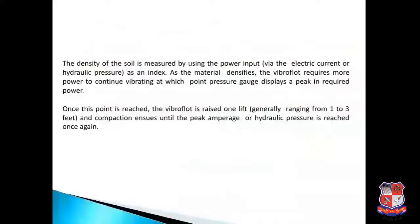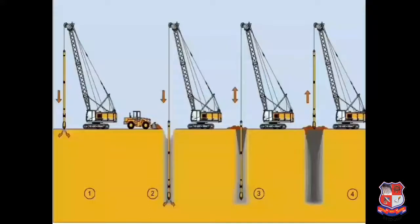The density of the soil is measured using power input via electric current or hydraulic pressure as an index. As the material densifies, the vibro-float requires more power to continue vibrating, and the pressure gauge displays a peak in required power. Once this peak is reached, the vibro-float is raised one lift, generally ranging from 1 to 3 feet, and compaction continues until the peak hydraulic pressure is reached again. A schematic diagram shows all the stages of this process.